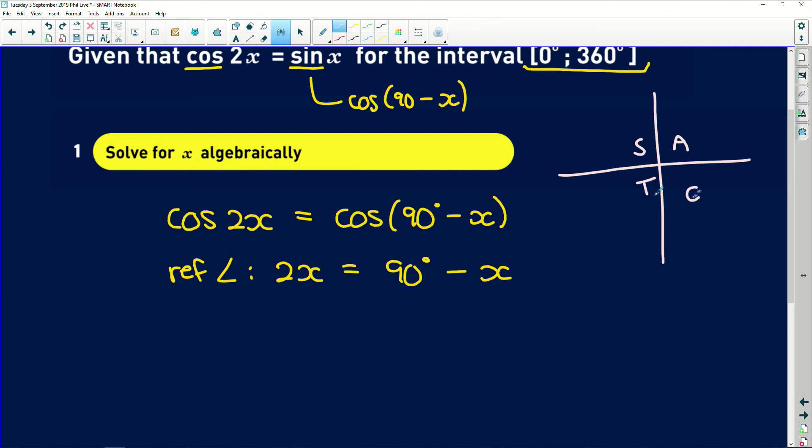It indicates where the ratios of each angle are positive. So because we're dealing with cos, very important, cos is positive in the first quadrant and the fourth quadrant.